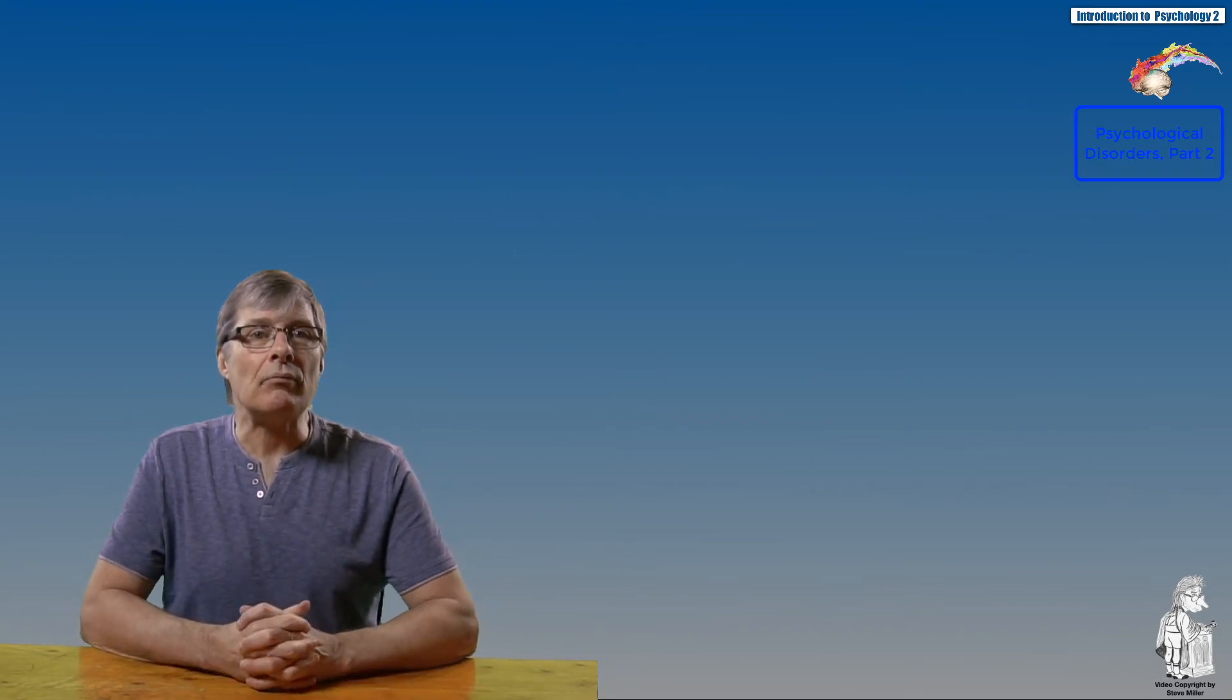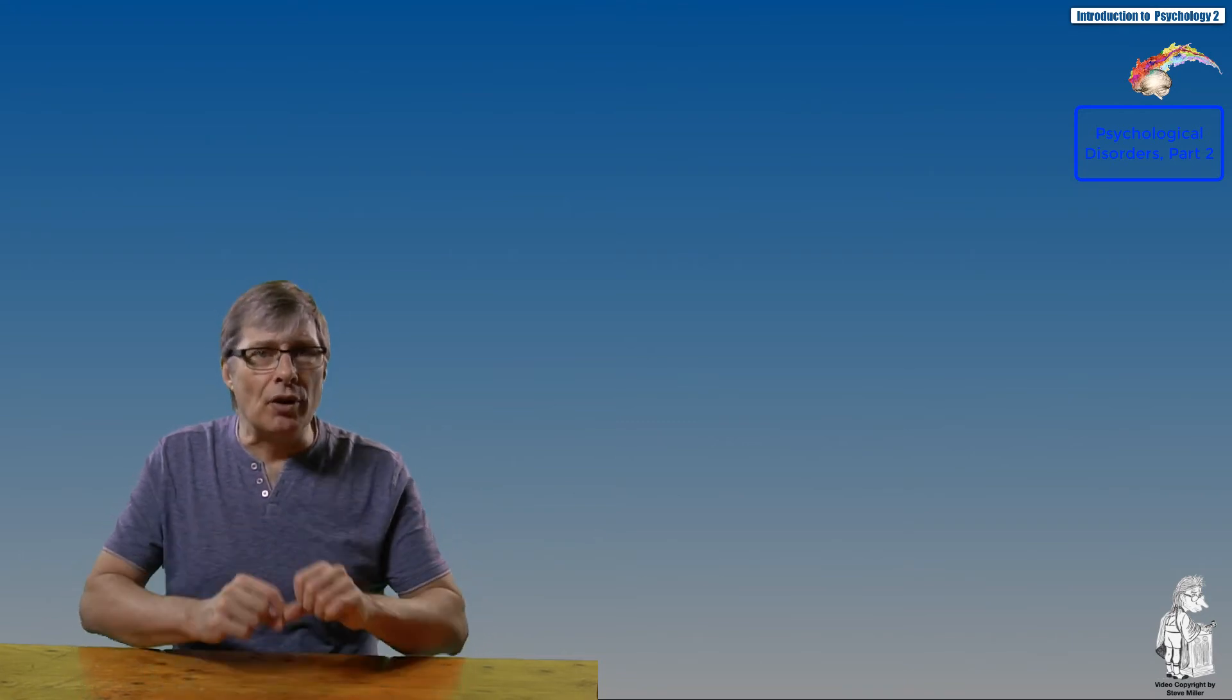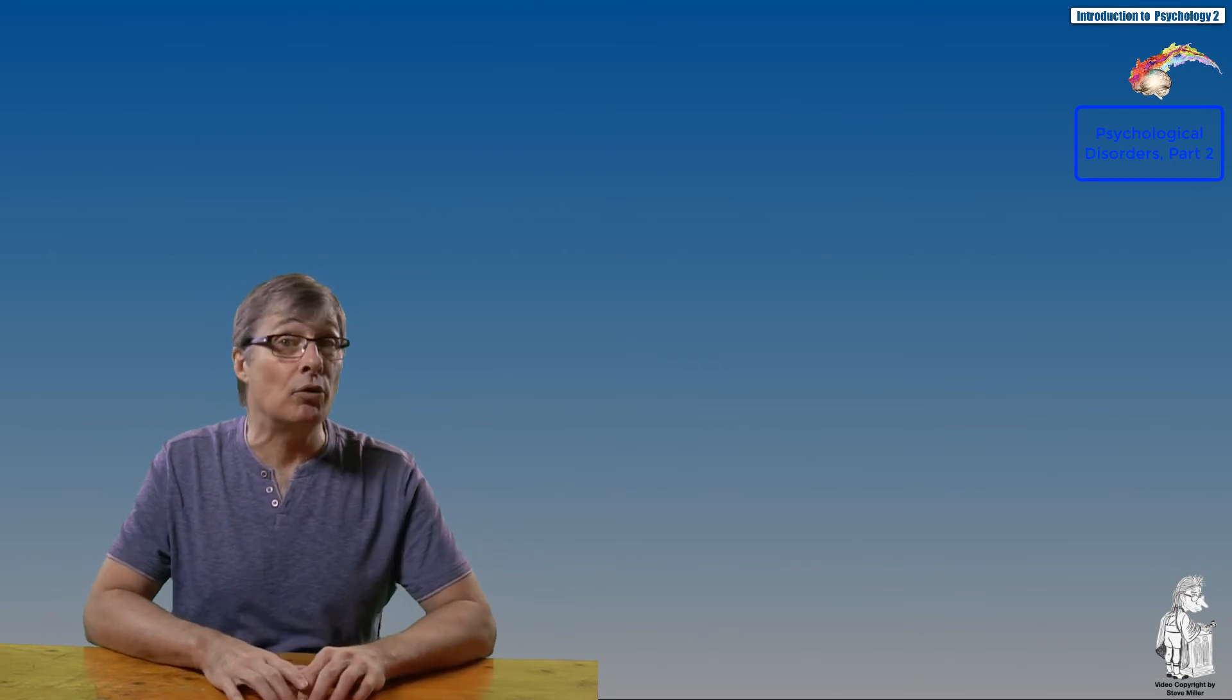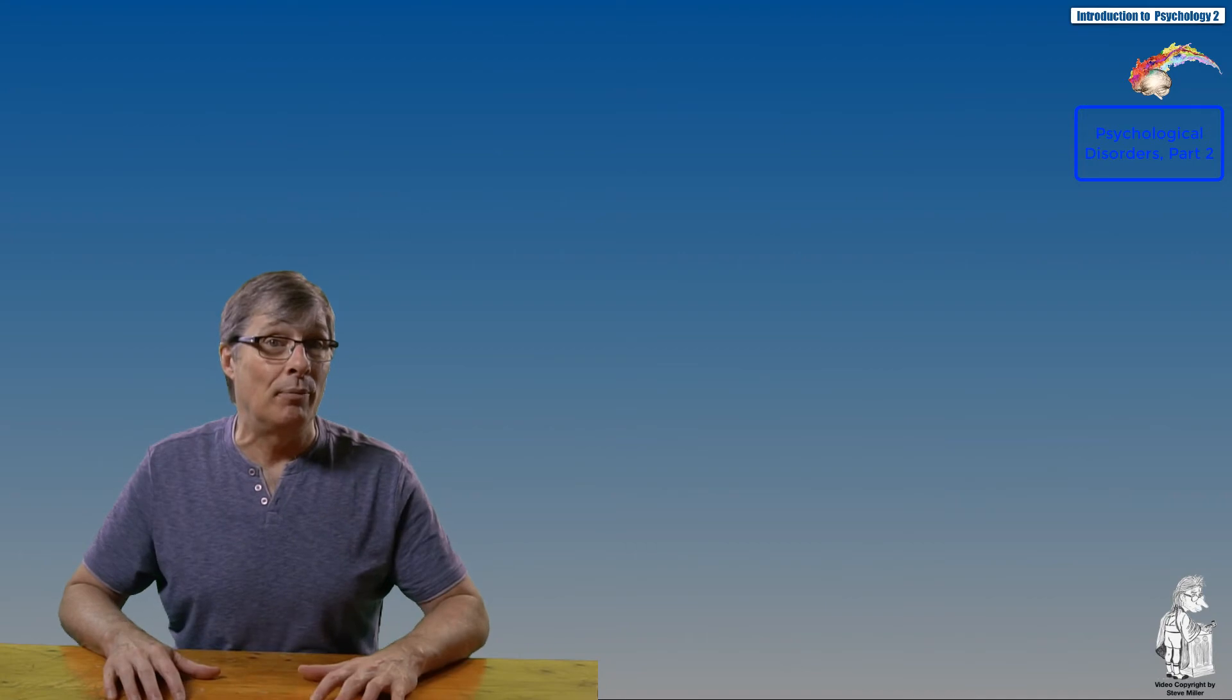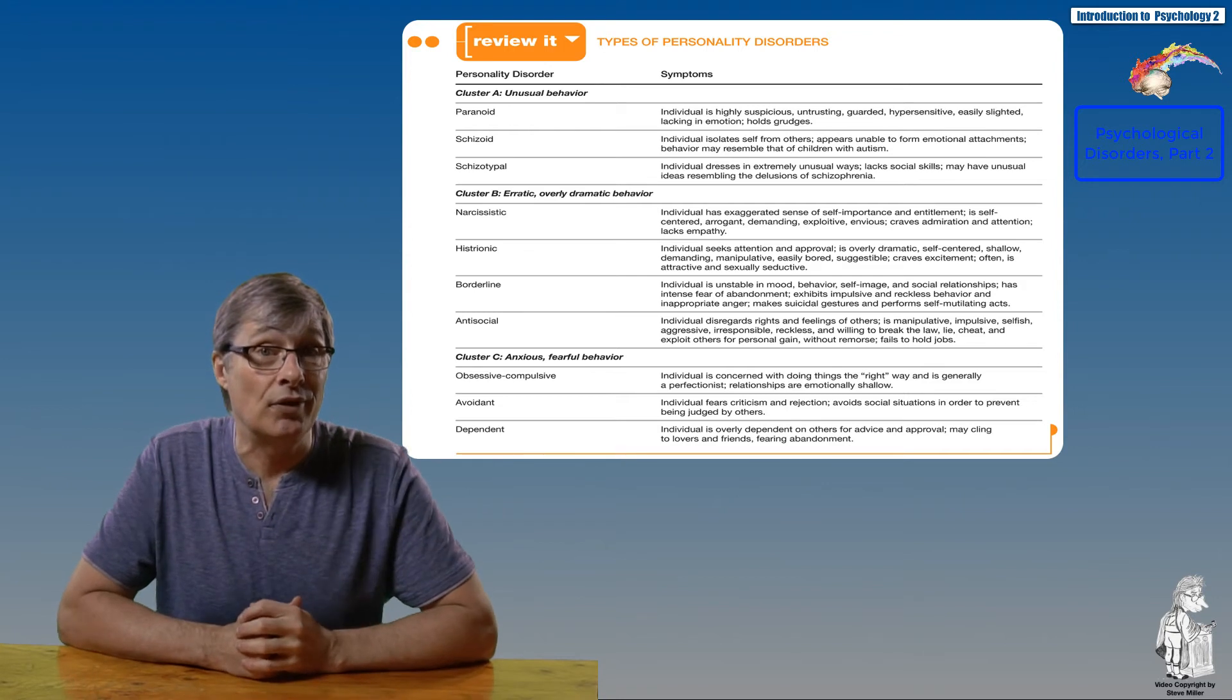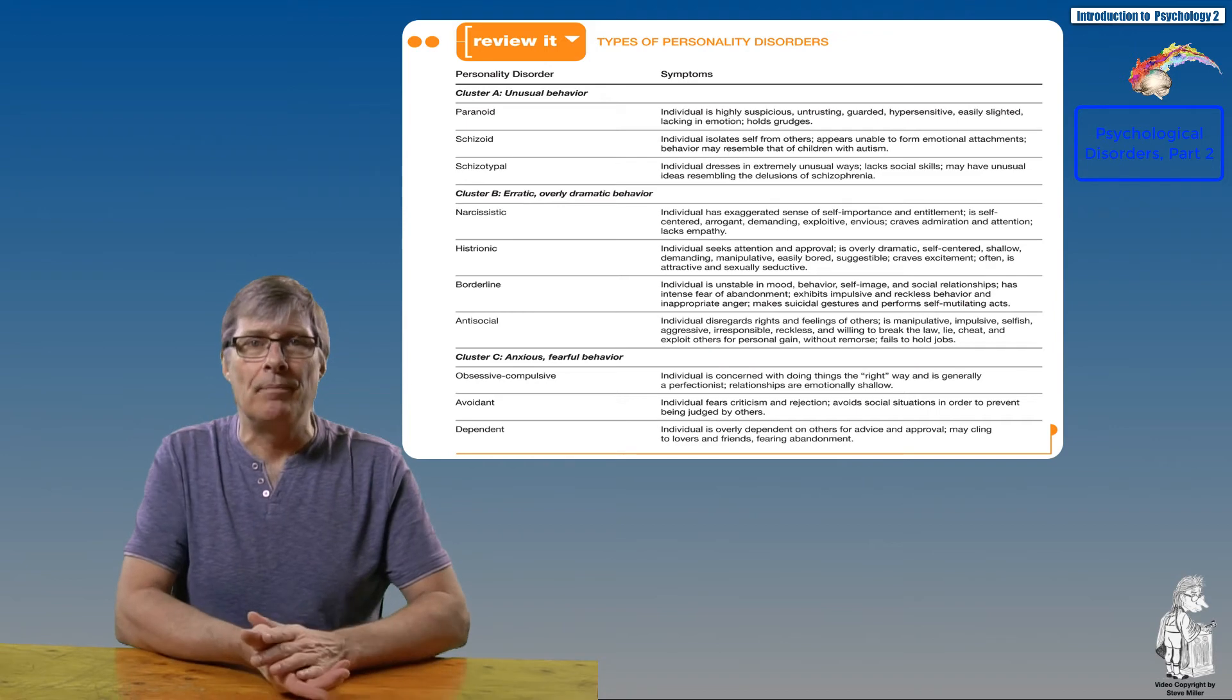Now personality disorder is an enduring pattern of inner experiences and behaviors that deviate markedly from the expectations of the individual's culture. It's pervasive and inflexible, has onset in adolescence or early adulthood, is stable over time, and leads to distress or impairment. The DSM-5 lists 10 categories of personality disorders, and the criteria used to classify them overlap considerably. The DSM-5 groups personality disorders into clusters.